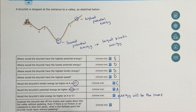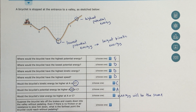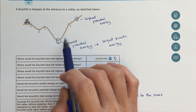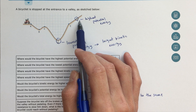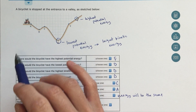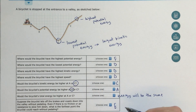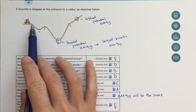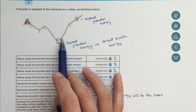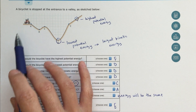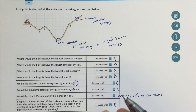Suppose the bicyclist lets off the brakes and coasts down into the valley without pedaling — no friction, no air resistance, so we're in the physics realm. What is the furthest point the bicyclist could reach without pedaling? If we just let the even transfer of energy happen: starting at point A, going down and then back up — could I get to point F? No, because that's a higher energy state than point A. So point E will be the highest, the furthest point I could reach with the same amount of energy. I transfer potential energy into kinetic energy going down, then transfer kinetic back into potential going up, but I can never get higher than the energy I started with at point A unless I pedal. So E is the final answer.